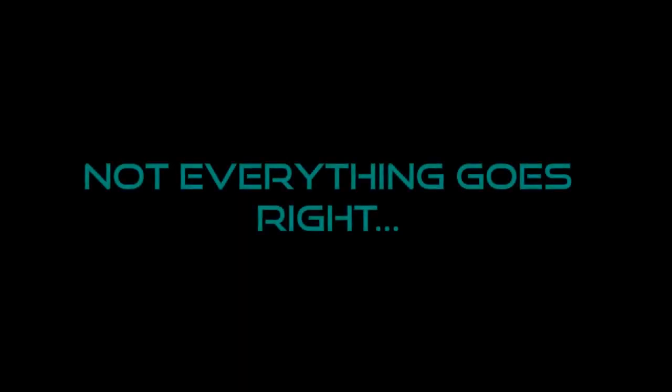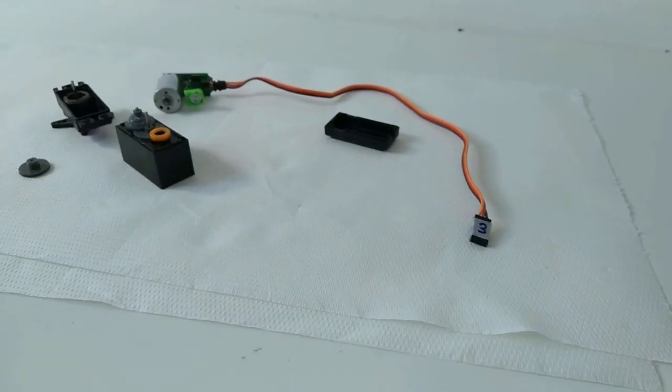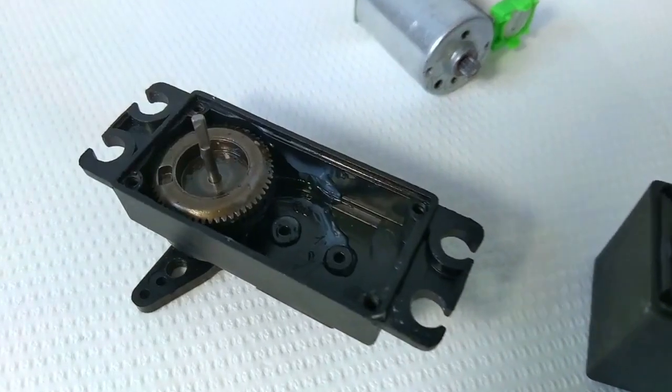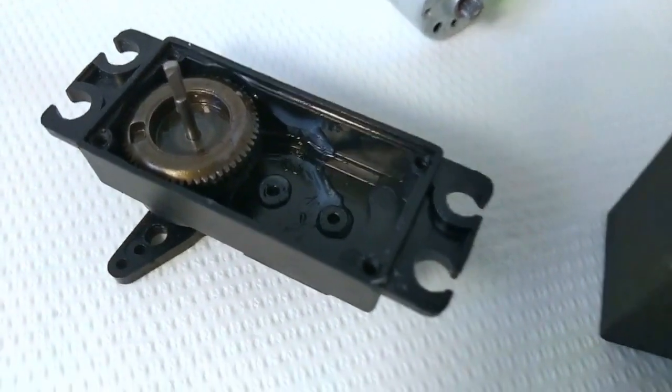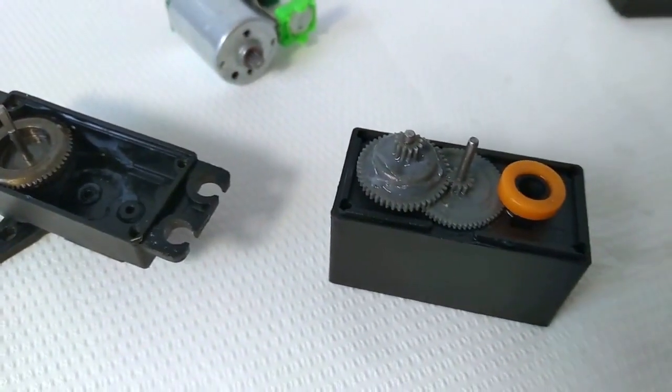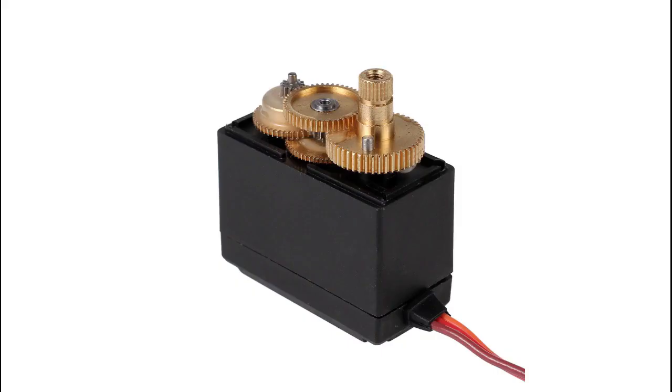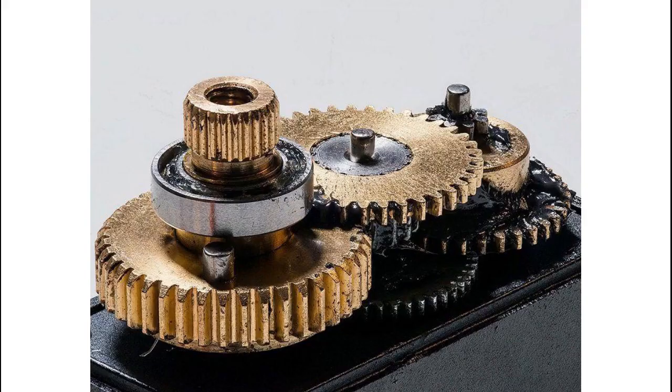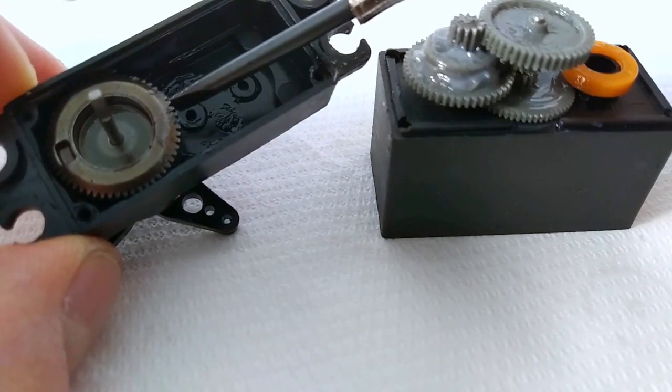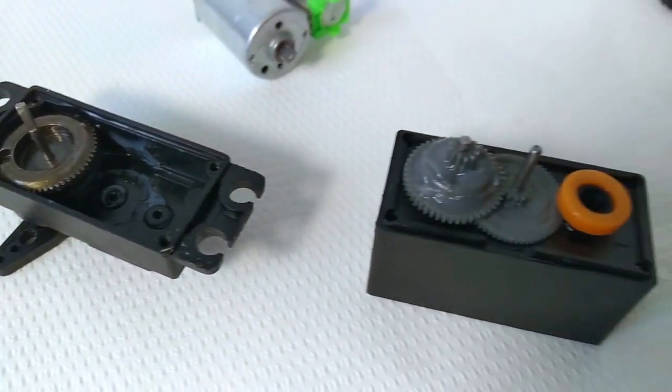I did have some problems along the way. The servo for elbow side movements started slipping gears and broke down. I opened it up to see what caused it. I found that it uses plastic gears. The reason why I chose the MG996R is because of its strong metal gearbox. This one only has one metal gear and the rest is made of plastic.